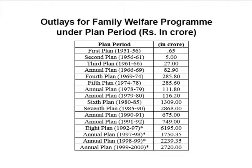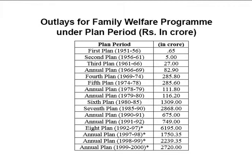Incentives were provided to acceptors before 1996. Here we review the plan-wise outlay for family welfare services as given in Table 12. It may be noted that there is a continuous increase in the outlay over the years. The outlay during the first plan period was 0.65 crore, increased to 5 crores in the second plan, and was 6,195 crores in the eighth plan, indicating increasing expenditure on the family welfare program.